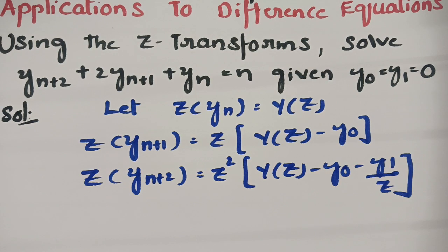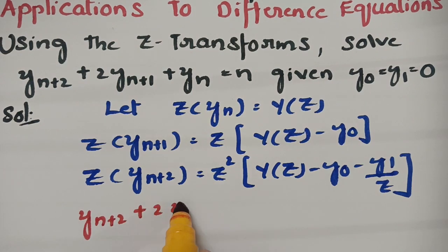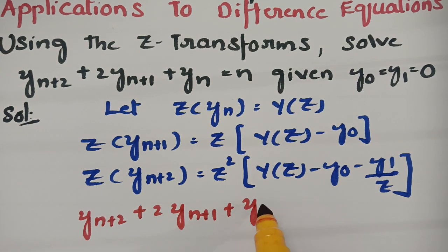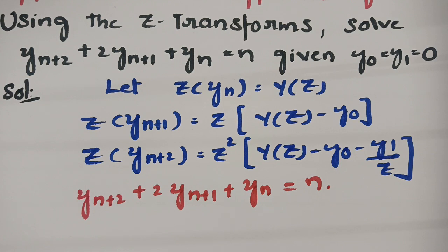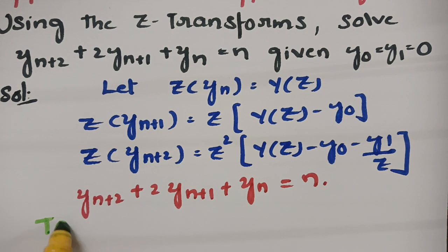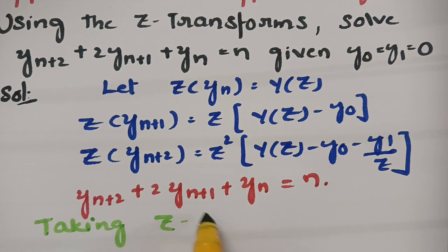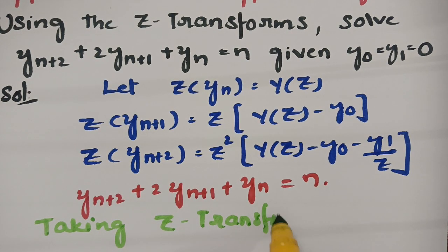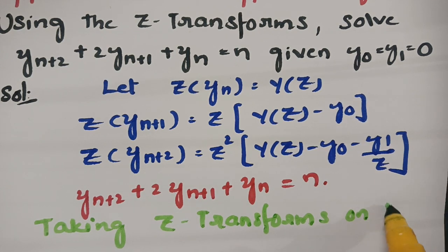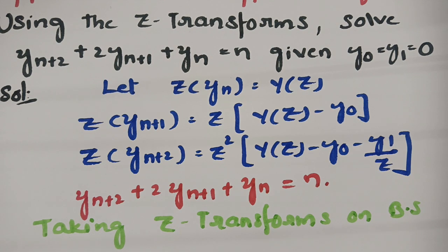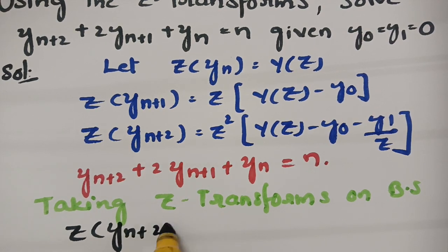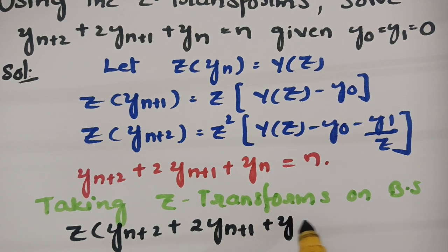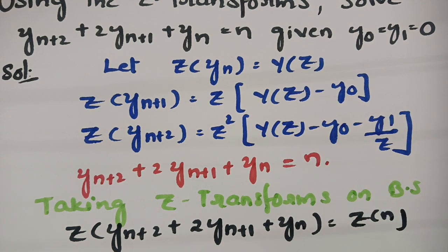From the given equation, the equation is y(n+2) + 2·y(n+1) + y(n) = n. Now we have to take Z transforms on both sides. After taking Z transforms on both sides: Z transform of y(n+2) + 2·y(n+1) + y(n) is equal to the Z transform of n.